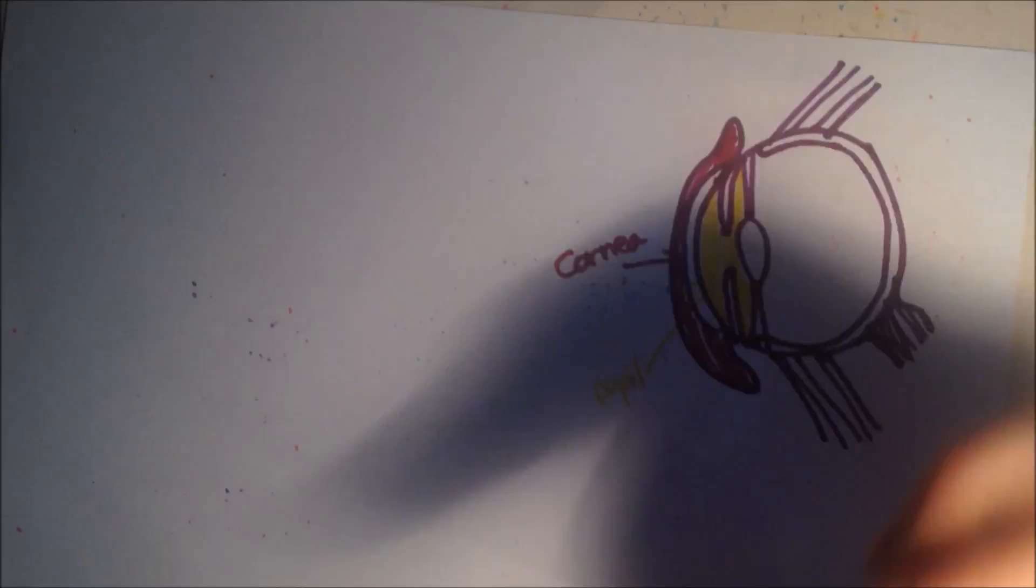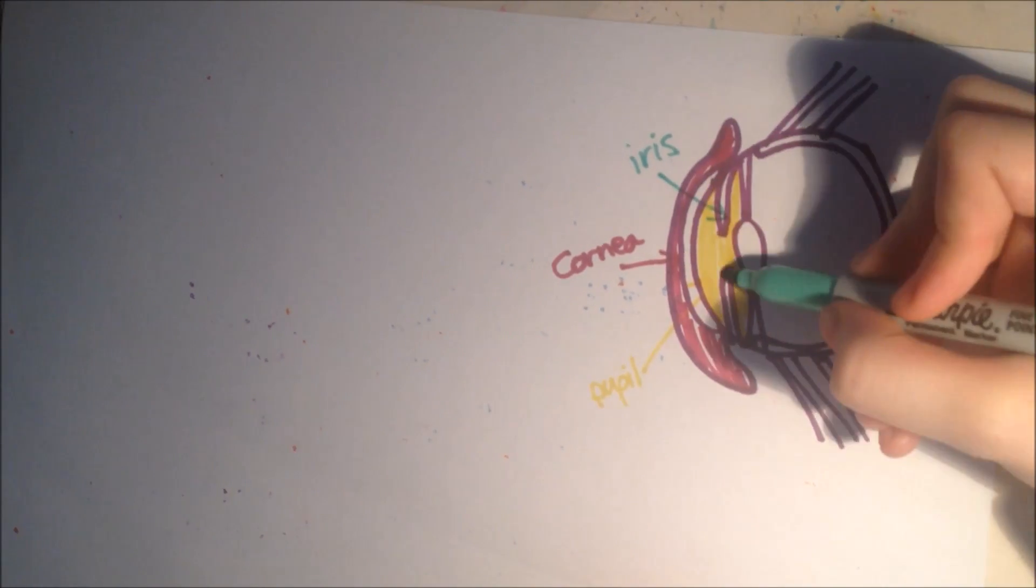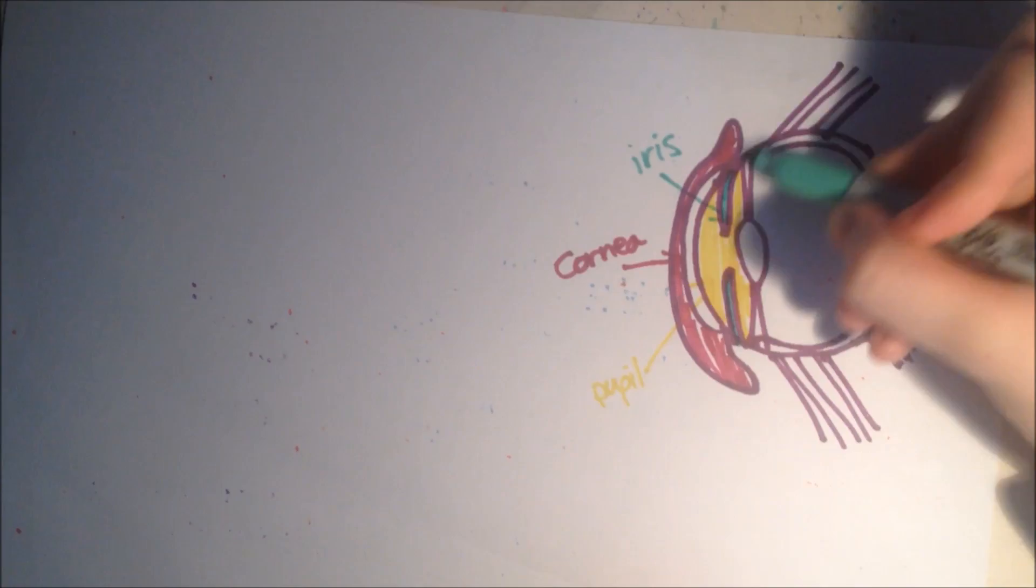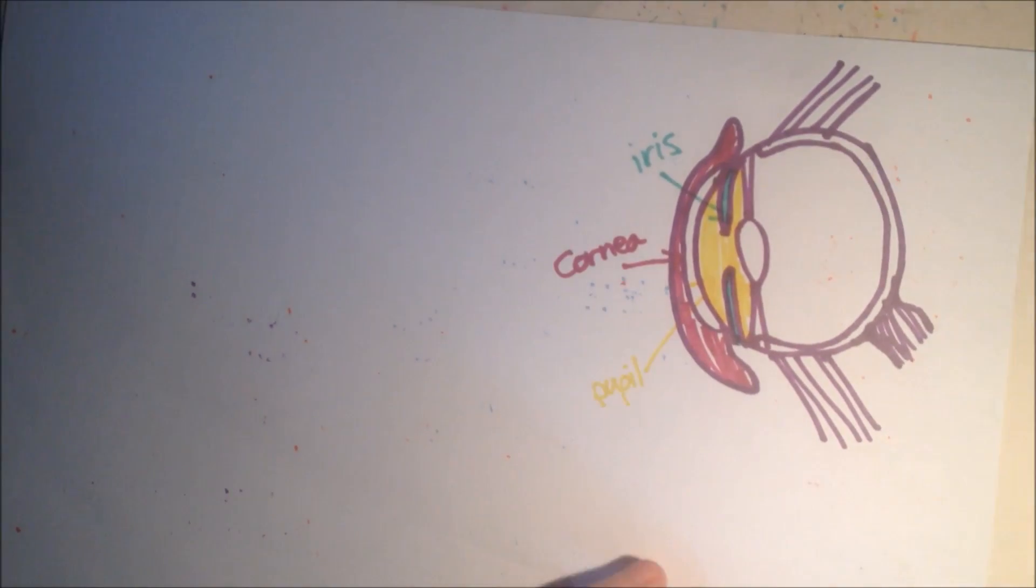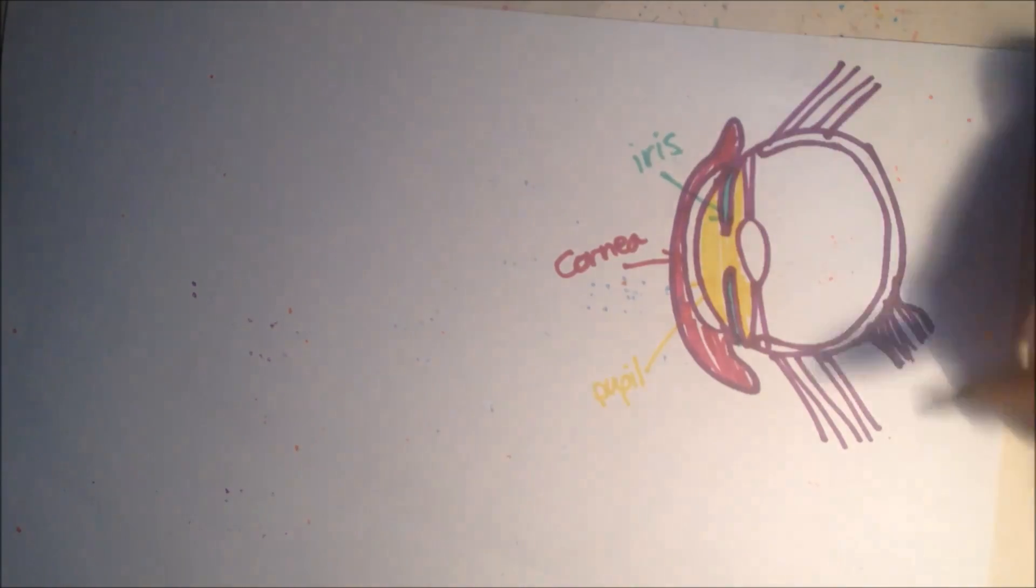Next we have the iris, which are here and also here. This controls how much light enters the eye, which is why in the solar eclipse you can't directly look at it because the iris can't control so well how much light enters the eye because the moon comes in front of the sun, so it can't exactly detect.